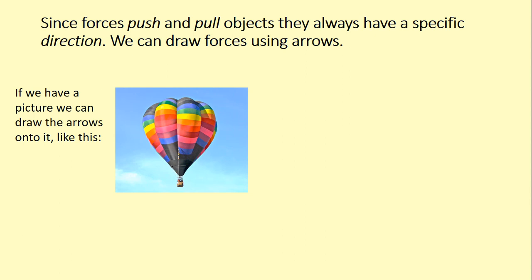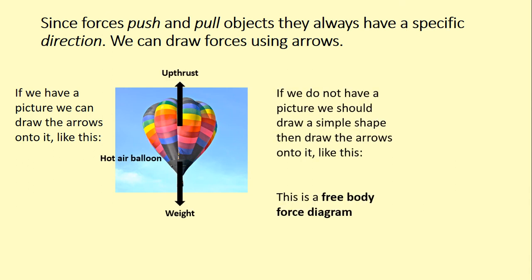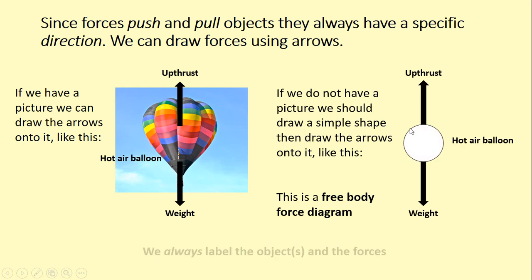We can draw forces using arrows, you've done this before. So if we've got a photograph we can draw the arrows on top of the photograph. In this case, a hot air balloon is just kind of hanging in the air, so it's got equal upthrust and weight. If we do not have a picture, the shape has to be simple. We do not want artwork of hot air balloons, we want a nice simple shape, so a circle adequately represents a hot air balloon as long as we label it. We've got the same arrows up and down with the size and the direction. We always label the arrows so we know that they represent the particular type of force we're talking about.